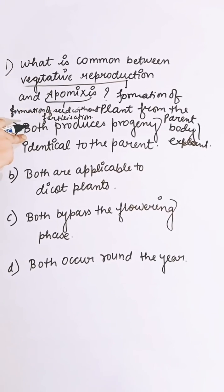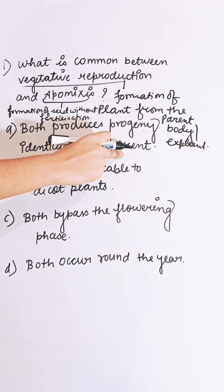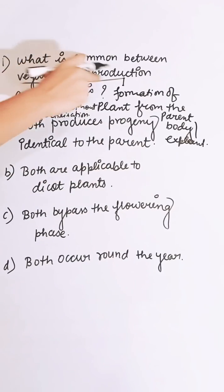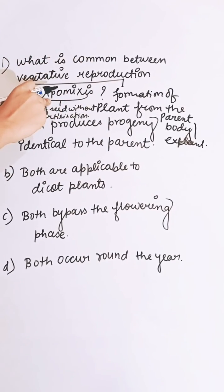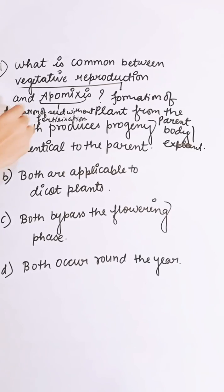Both produce progeny identical to the parent — this is what is common in vegetative reproduction and apomyxis. So the correct answer is A.